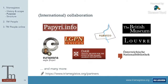This Trismegistos number is not only used internally for disambiguation purposes but also externally. Other projects, when they share their data, link it to the correct TM number. If it's a new text, we create a new TM number and then feed the information back to the projects and link to them on our website. Partners also show the TM number on their websites often, and we also have an API that they can use to pull in data from Trismegistos automatically. Our main goal is basically to bridge those disciplinary towers.